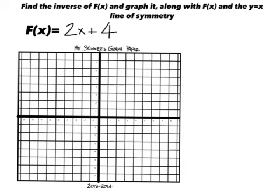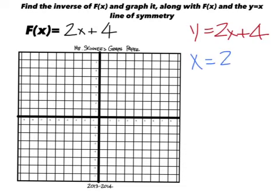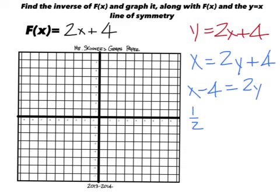Now we'll find another inverse function. Start with y equals 2x plus 4, swap x and y to get x equals 2y plus 4. Move the plus 4 to the left to make it minus, giving you x minus 4 equals 2y, then divide everything by two. That's your inverse function.